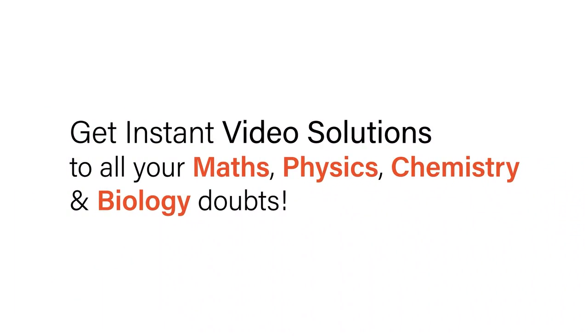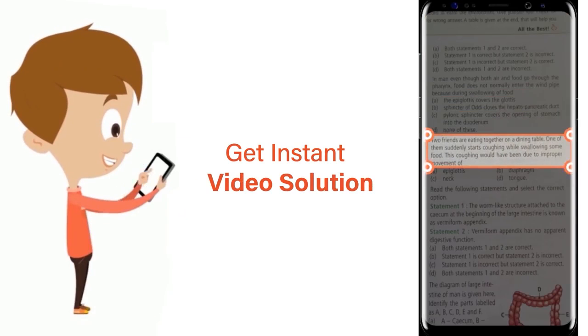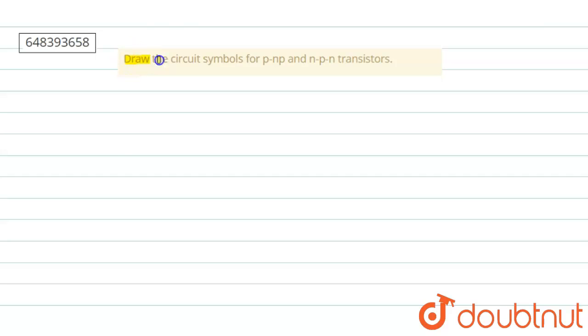With Doubtnut, get instant video solutions to all your maths, physics, chemistry, and biology doubts. Just click the image of the question, crop the question, and get instant video solution. Download Doubtnut app today. So the given question is: draw the circuit symbols for PNP and NPN transistor.